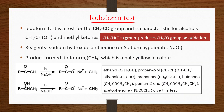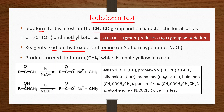Next is the Iodoform test, a test for the CH₃CO group. It is characteristic for alcohols with the CH₃CHOH group and methyl ketones (CH₃CO). The CH₃CHOH group produces CH₃CO on oxidation. The reagents used are sodium hydroxide and iodine, which react to form sodium hypoiodite (NaOI). The product formed is iodoform (CHI₃), a pale yellow solid. The reaction: RCOCH₃ + I₂/NaOH → CHI₃.